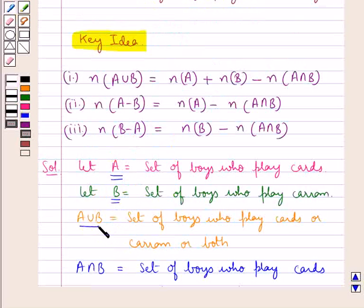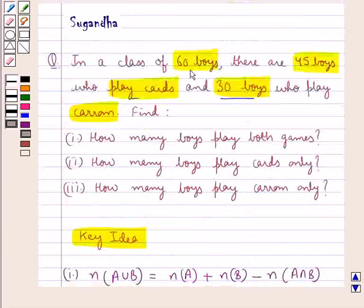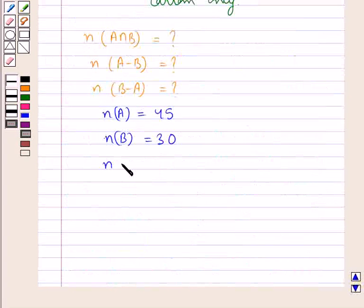A union B is the set of boys who play cards or carom or both, which means it represents the total number of boys in the class. Thus, the number of elements in A union B is equal to 60.